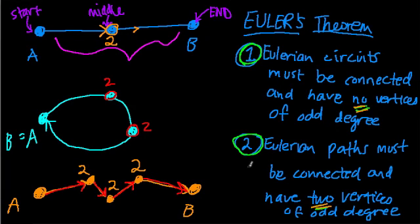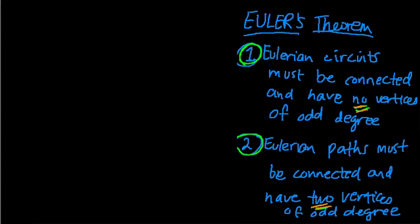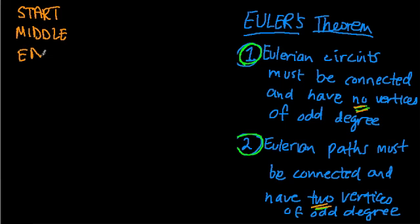We're continuing the proof of Euler's Theorem here. In the last video, we established that the middle vertices have to all be even. So now we're going to analyze the start and end vertices. If you look back at the previous video, you'll see that we categorize all vertices in three groups: where you start, the middle, and the end vertex. And for the middle, we established that those are all even — they have to be, because you're passing in and out of every vertex in the middle. You're not stopping. That's an even process, so all the vertices in the middle have an even degree.